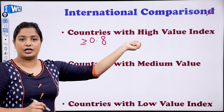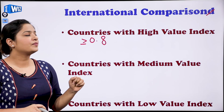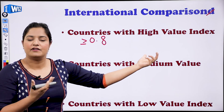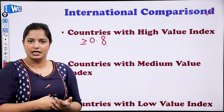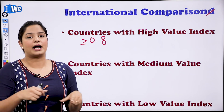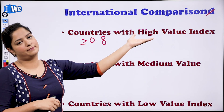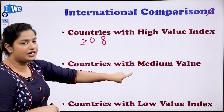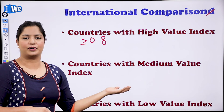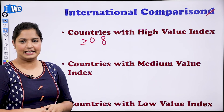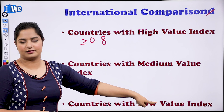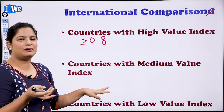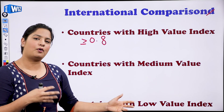Countries with a high value index include Britain, Germany, and the USA. Generally these were colonizer countries — they ruled over other nations, exploited their labor and natural resources, and used other countries as markets for trade. So they are now highly developed. Countries with a medium value index are those that were colonized — they became independent and are slowly developing, mostly developing countries. Countries with a low value index, for example most African countries, still have poor education, poor sanitation, and are in very bad condition.